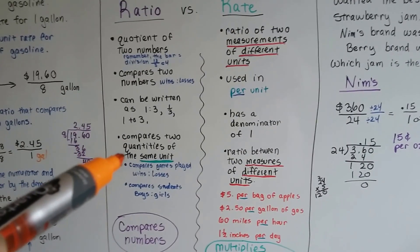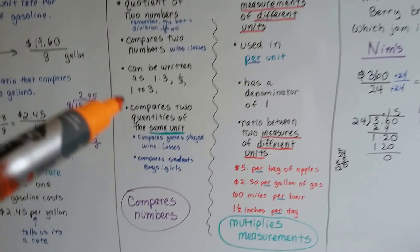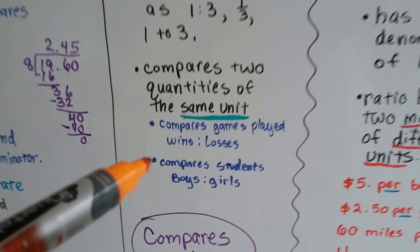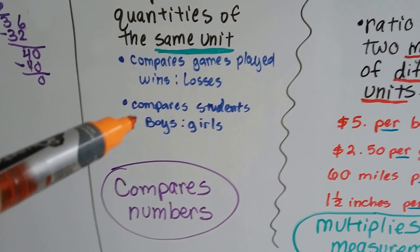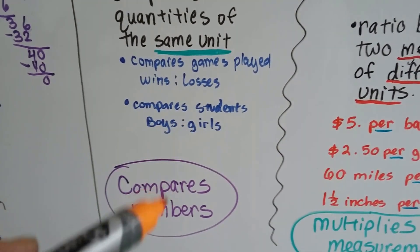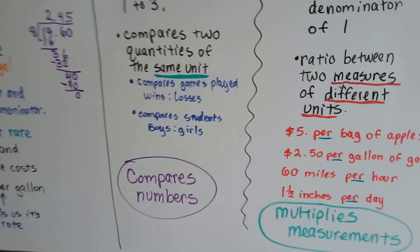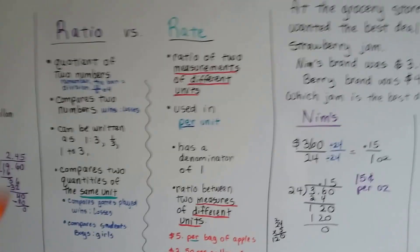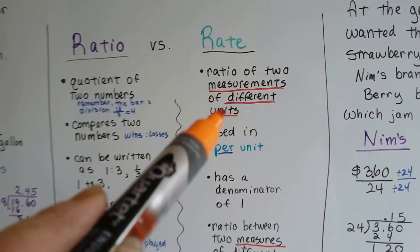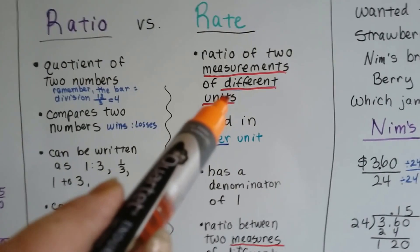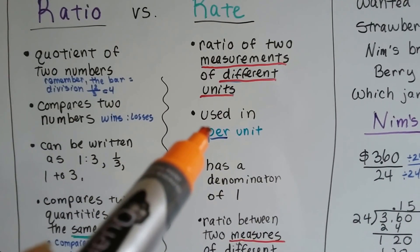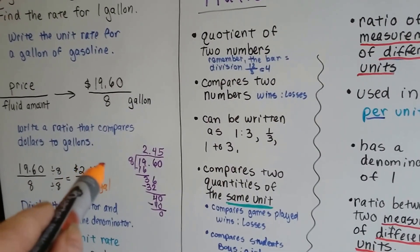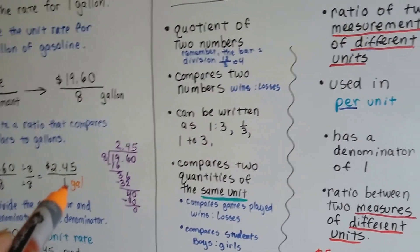A ratio compares two quantities of the same unit. So a ratio would compare games played — wins to losses — or students, boys to girls. It compares numbers to each other. Whereas a rate is a ratio of two measurements of different units, used in per unit. It has a denominator of 1, like we did here — $2.45 per gallon.